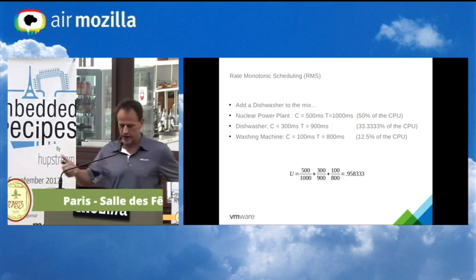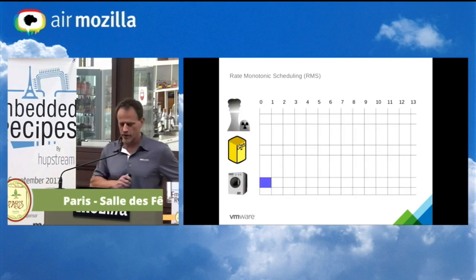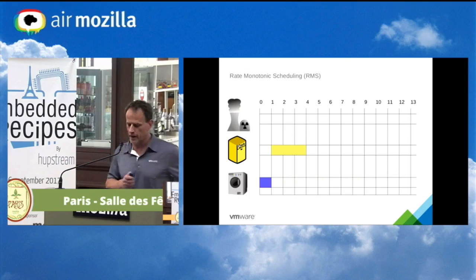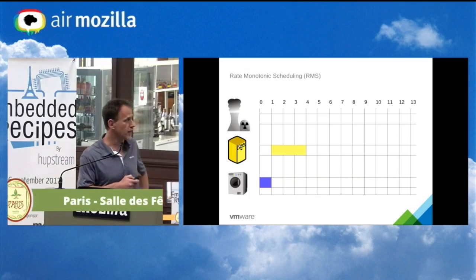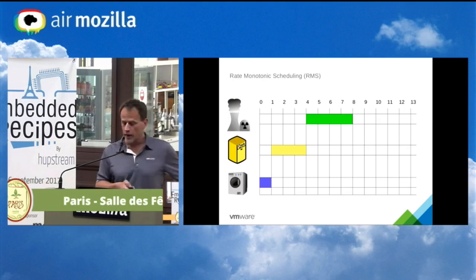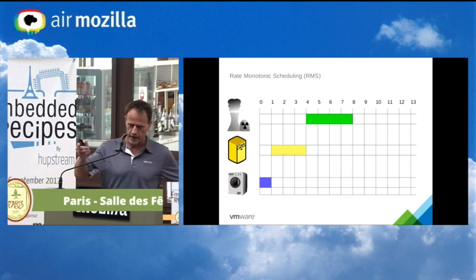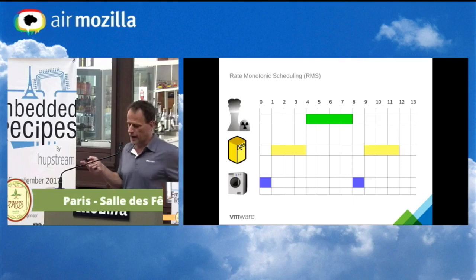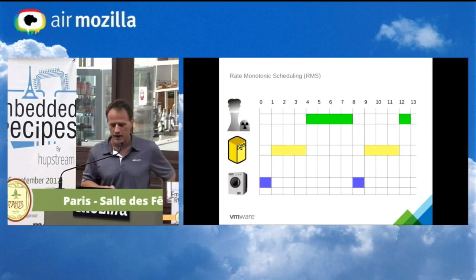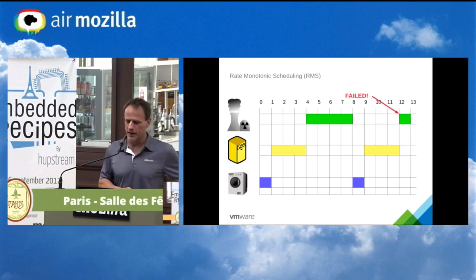One out of eight is the washing machine, three out of nine is the dishwasher, and five out of ten is the nuclear power plant. The washing machine goes off first, then the dishwasher for three units out of nine. When we hit unit eight, the nuclear power plant has only run four units, and now the washing machine has to run again to make its period. The dishwasher runs too, and the nuclear power plant didn't make its deadline. It failed.